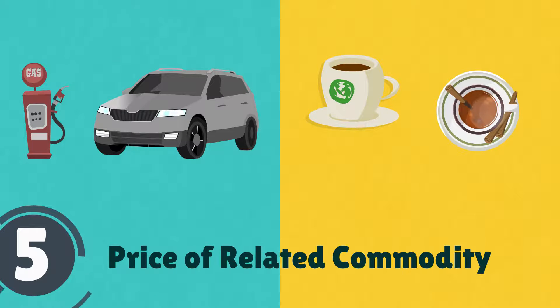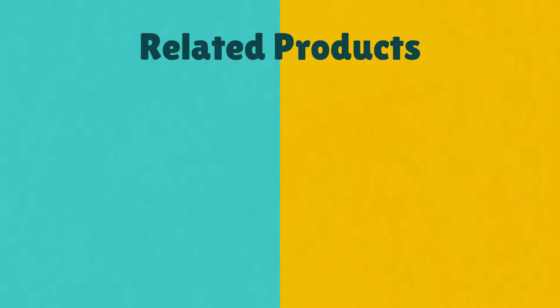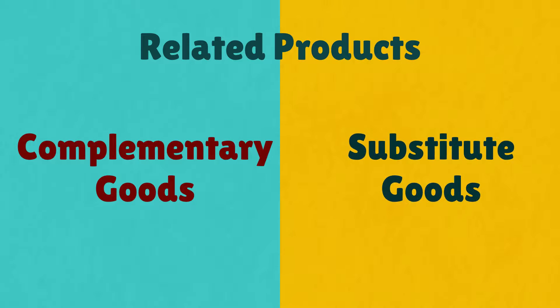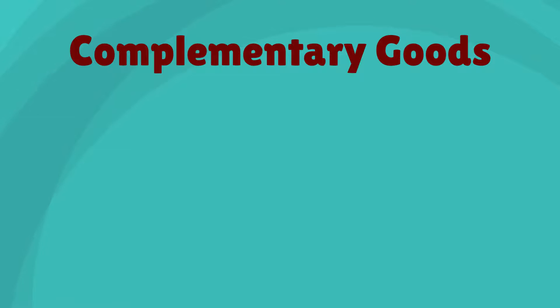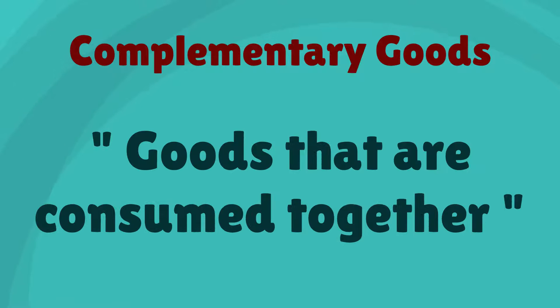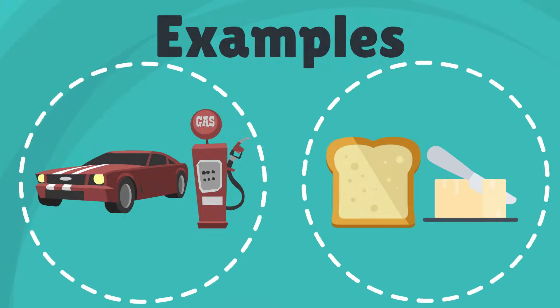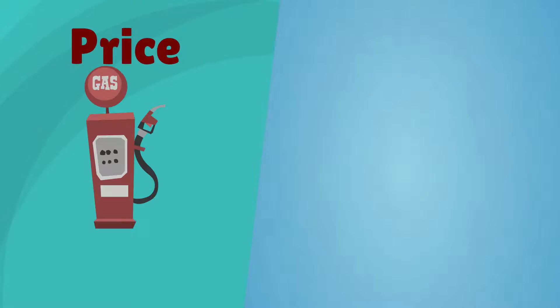Another determinant is the price of related commodities. Related commodities are of two types: complementary goods and substitutes. Complementary goods are the ones that could be consumed together — for example, car and petrol, bread and butter.